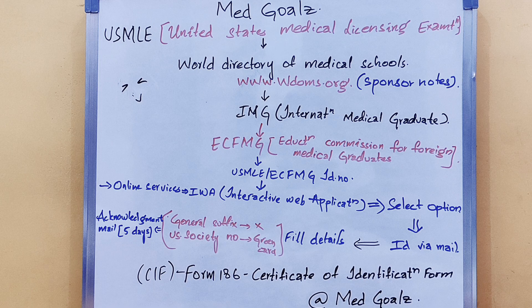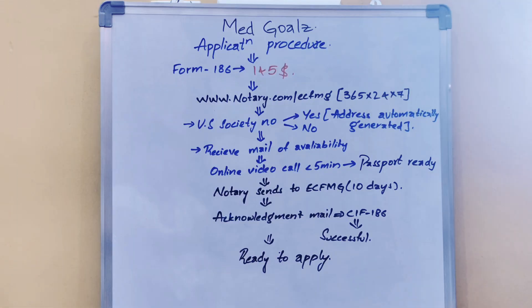That acknowledgement is Form 186, the Certificate of Identification. This Certificate of Identification Form costs about $145. The next thing you should do is go to Notary Cam, which is an online registration process to verify that everything is in proper order.